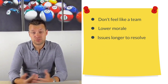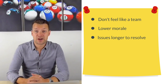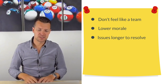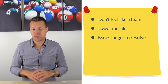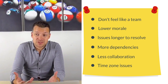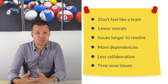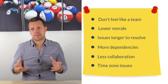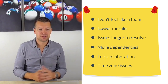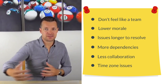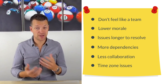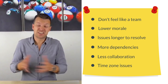Generally morale is lower and issues take longer to resolve. Things fall through the cracks more often — people leave things to one another without really knowing who's doing what or where responsibilities lie, so there are more dependencies and less collaboration. There are also the time zone issues — the more distributed you are, the less overlap there is, which limits the opportunity to work together and tends to split work into patches that individuals, rather than the team, handle.